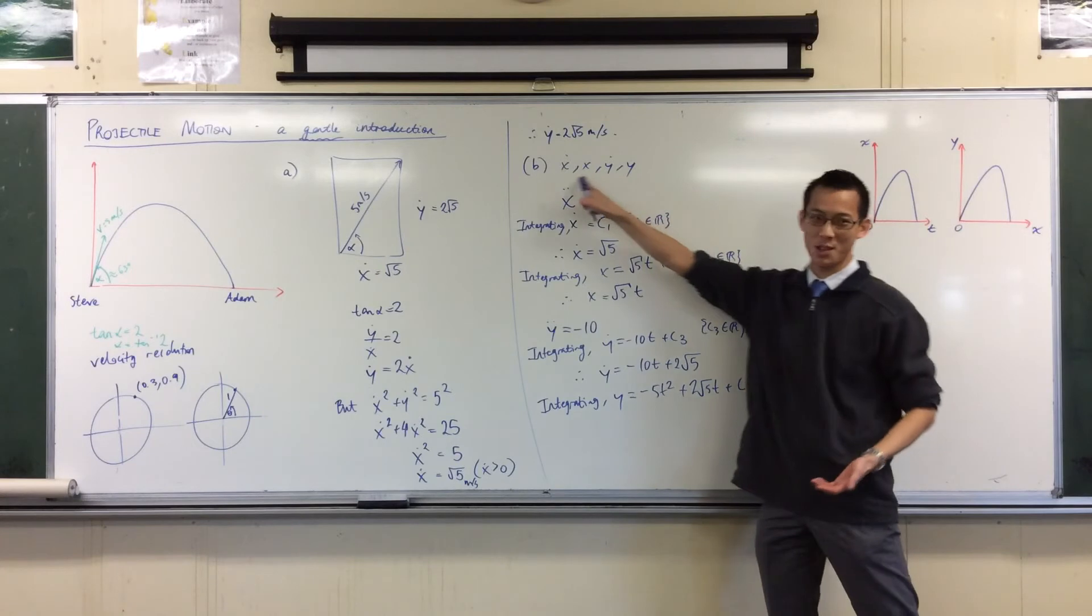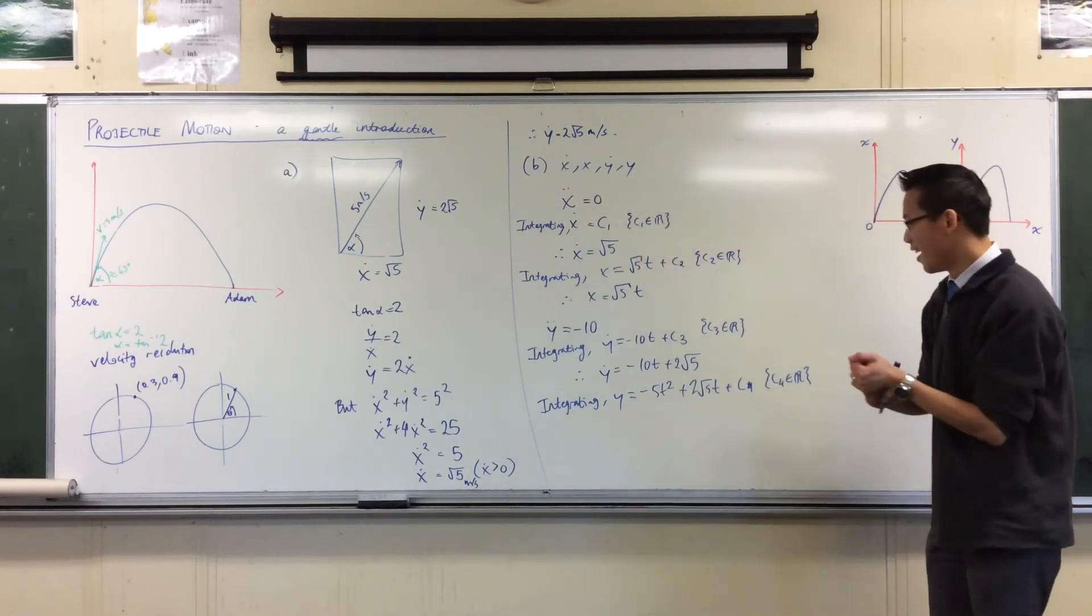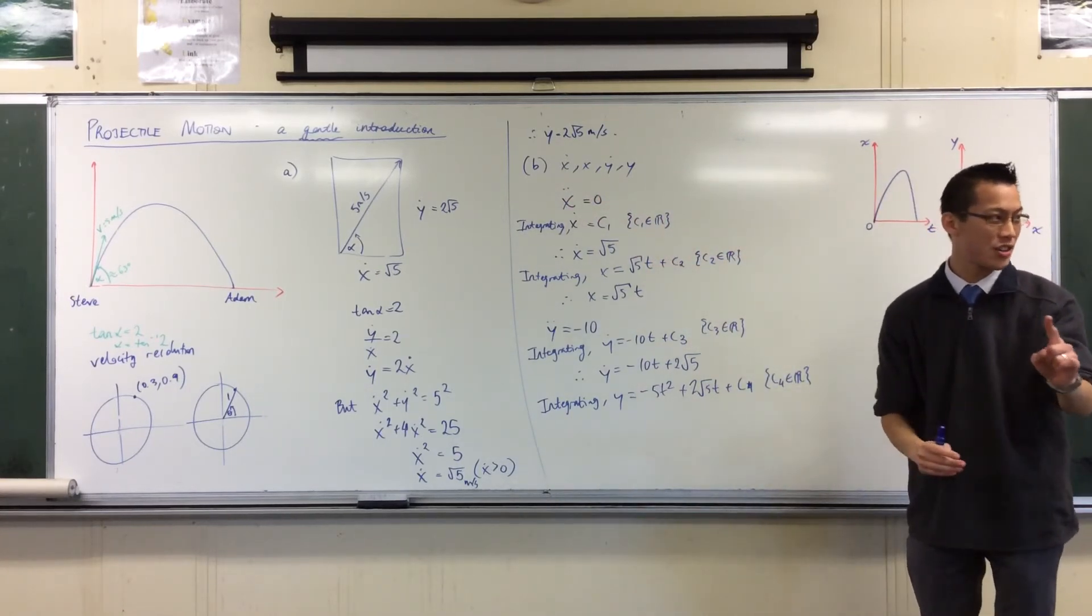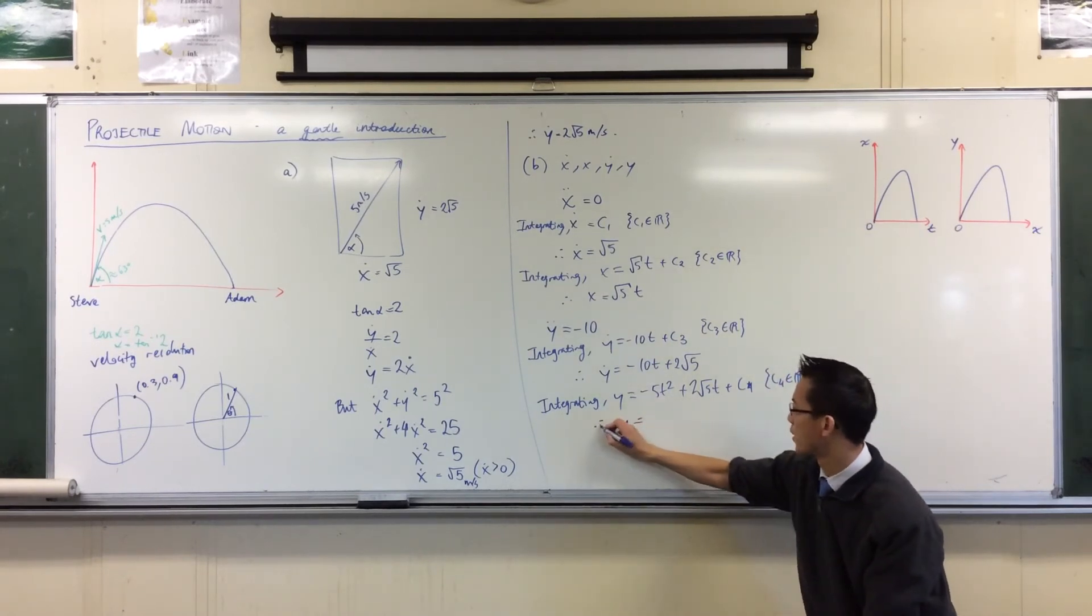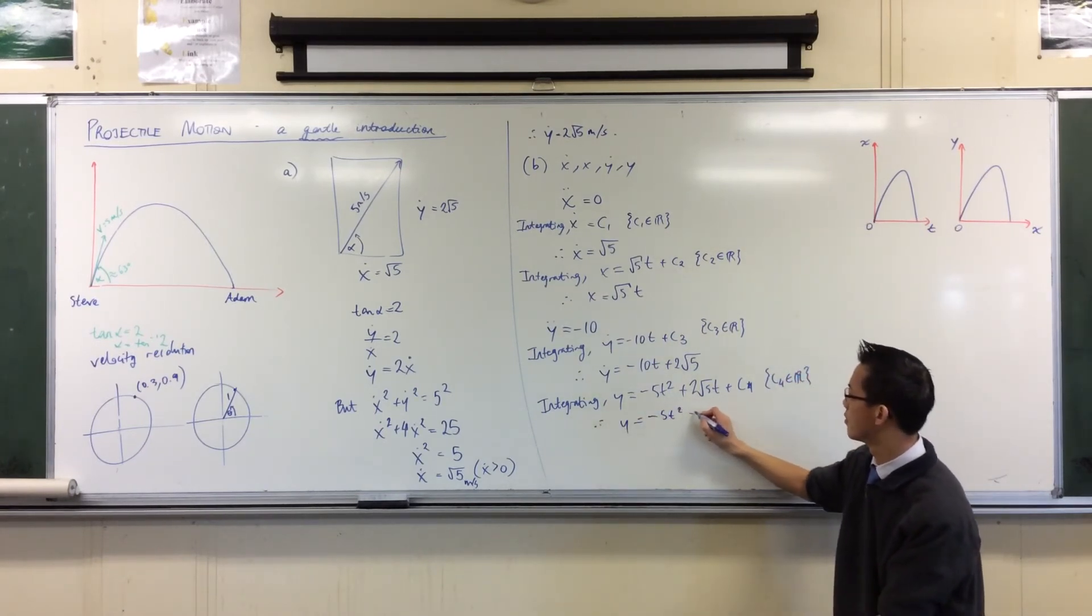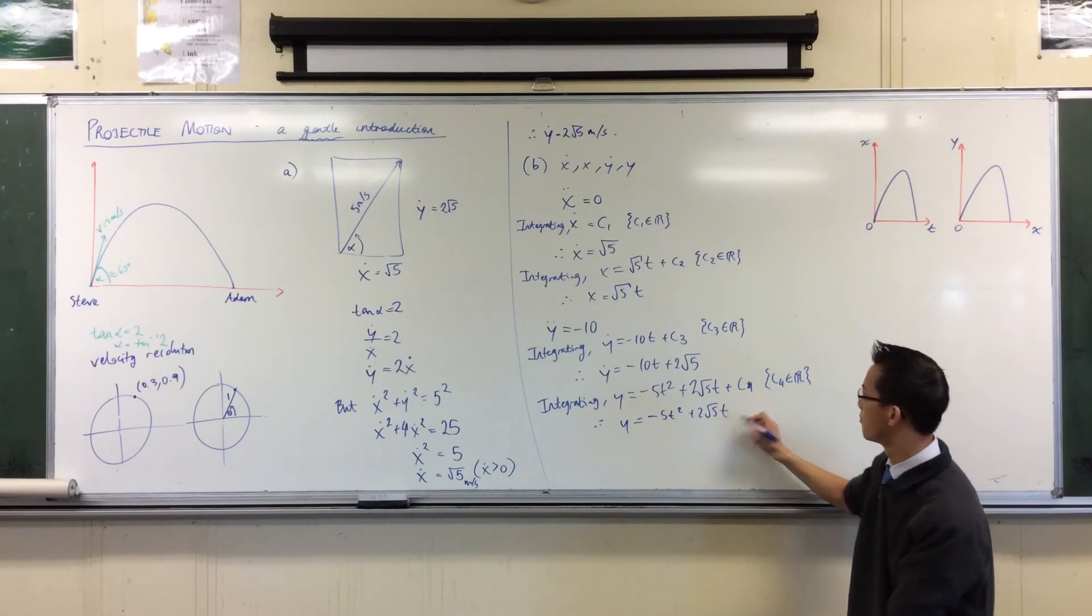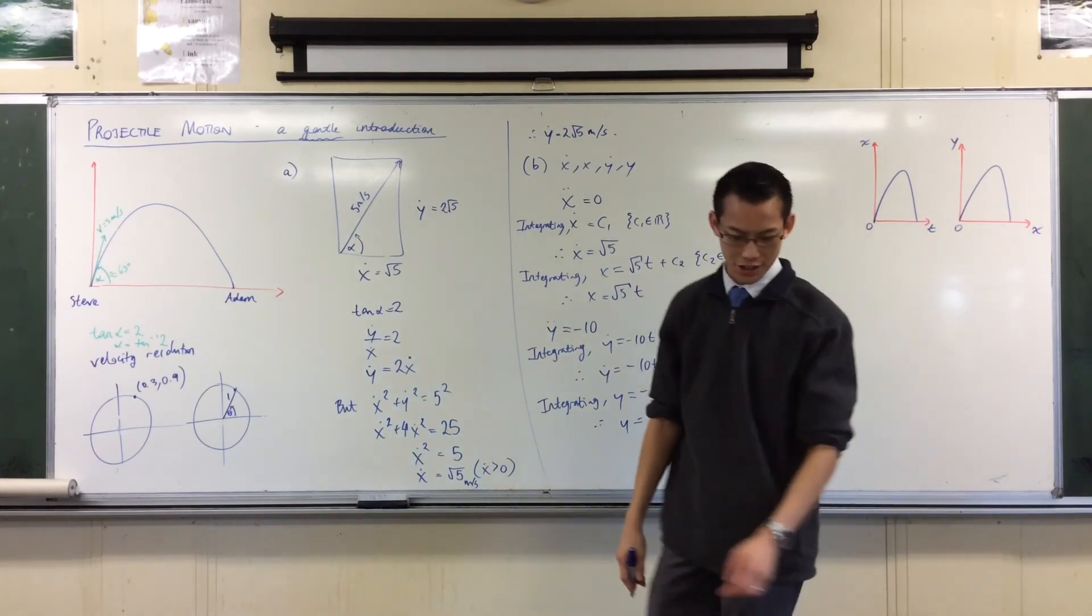Of course we got four constants because we had to integrate four times. Again, we're starting at the origin, which is 0, 0. So thankfully he becomes 0. There you go. Four equations.